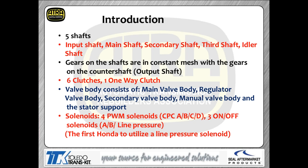For solenoids, you've got a series of PWM solenoids — the CPC or clutch pressure control solenoids — labeled A, B, C, and D, which control your clutch pressure. Then you have on/off solenoids A, B, and C, plus a line pressure solenoid. There are a lot of changes in how this portion of the design actually functions.